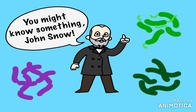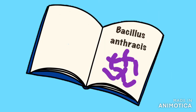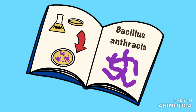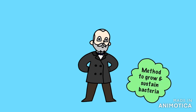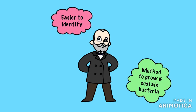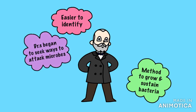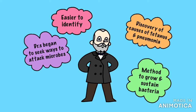Koch later discovered the bacteria that caused TB and cholera, proving John Snow right. He published his methods, which involved growing bacteria using agar jelly and a petri dish to grow cultures of pure bacteria, allowing Koch to identify specific bacteria causing disease. Koch invented a method to grow and sustain bacteria to make them easier to identify. Doctors now began to seek ways to attack the microbe that caused disease rather than just the symptoms – a huge turning point. He inspired other scientists to discover the causes of pneumonia and tetanus, and his methods are still used to this day.